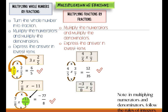Next example is negative 3 over 8 times 6 over 5. Multiply negative 3 by 6 and that is negative 18, and multiply 8 by 5 and that is 40. The lowest terms is negative 9 over 20, since 18 and 40 are both divisible by 2.